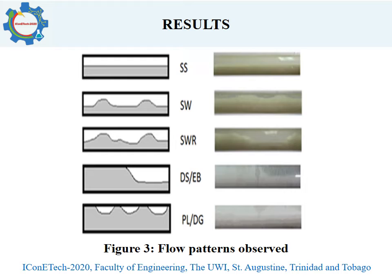The flow patterns observed are shown in Figure 3. The flow patterns showed gas flowing at the top of the pipe with liquid flowing at the bottom. The stratified smooth, or SS flow pattern, occurred when the gas-liquid interface was smooth. The stratified wavy, or SW flow pattern, has a wavy gas-liquid interface. The stratified wavy with ripples, or SWR flow regime, contains ripples between higher amplitude waves. The flow regime was classified as dispersed slug elongated bubble, or DSEB flow, when the liquid occupied the entire pipe and intermittently long air bubbles occupied the top of the pipe. The flow regime was classified as plug dispersed bubble, or PLDB flow, when the liquid occupied the entire pipe and periodically small air bubbles occupied the top of the pipe.